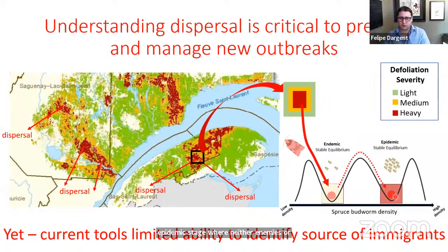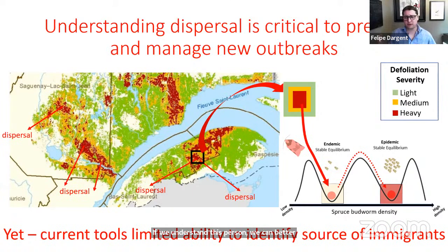This could potentially shift individuals from a stable endemic equilibrium — where they are controlled by their natural enemies and stochastic survival — to an epidemic stage where neither enemies nor stochasticism can control the population. This is what drives the spread of the outbreak. If we understand dispersal, we can better predict the conditions that drive these outbreaks, predict spread better, and develop better tools to manage population changes.